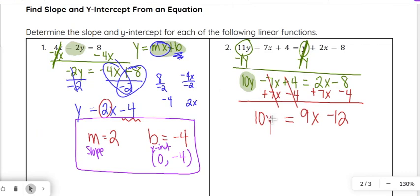At that point, we still have to get y by itself. It has the 10 attached to it, so that's 10 times y, so we're going to divide by 10 on both sides. That way we can simplify the 10y over 10 to just y equals, and then just like on the last one, we're going to have to divide both terms by that 10, so 9x divided by 10 and -12 divided by 10.